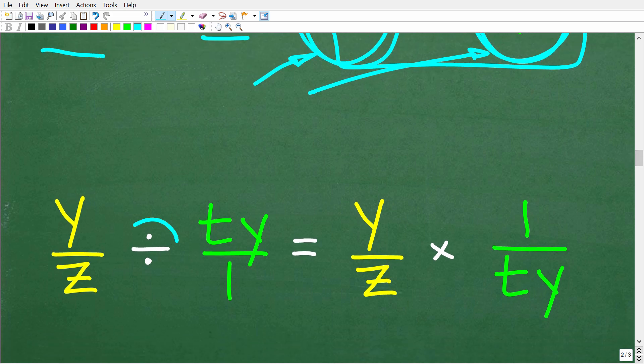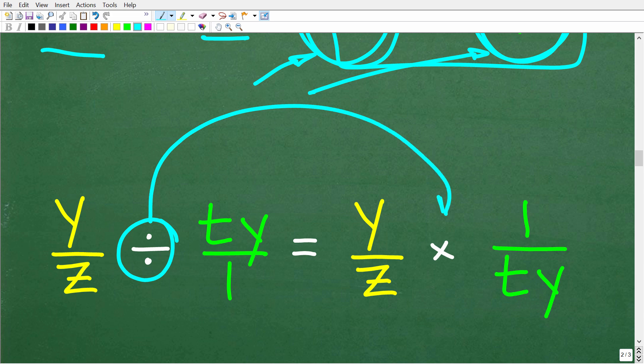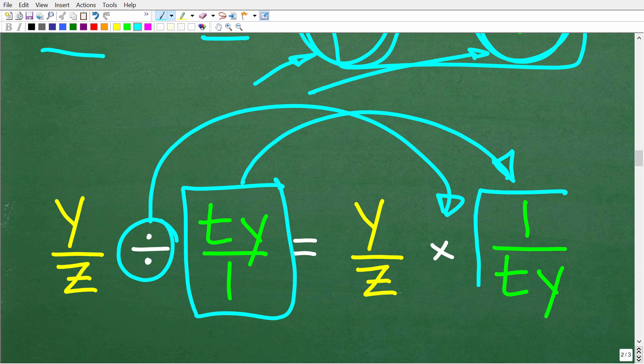What we're going to do is change the problem from division to multiplication by flipping the fraction to the right of the division operator upside down. In other words, finding the reciprocal. So we're going to take this ty over one and flip it upside down. So now we have one over ty. And we're going from division to multiplication.